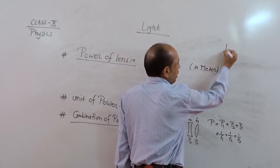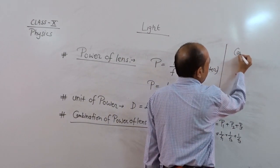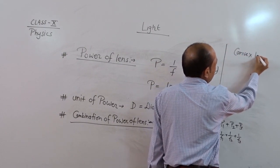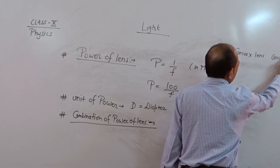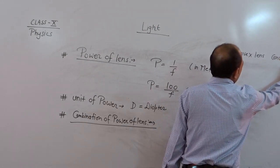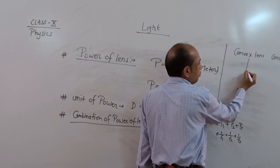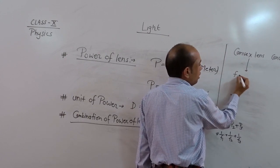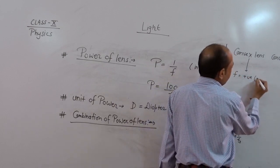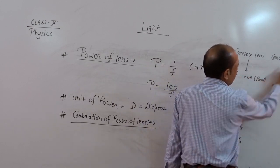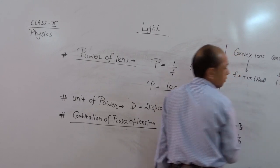As we know that we have two types of lens: convex and concave. If we talk about focal length, for convex lens focal length is to be positive for real image. Similarly for concave lens focal length is to be negative for virtual image.